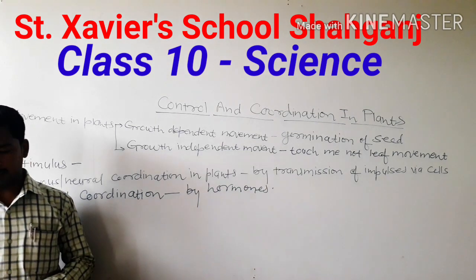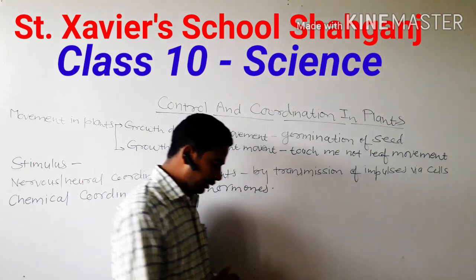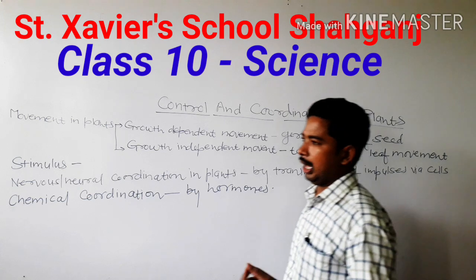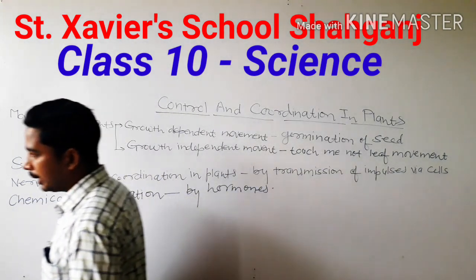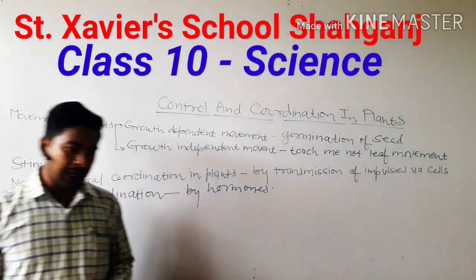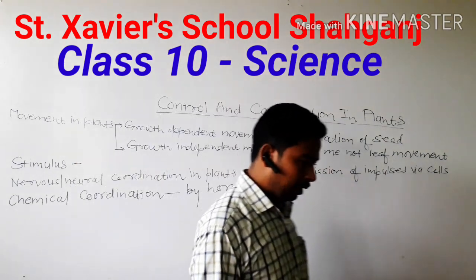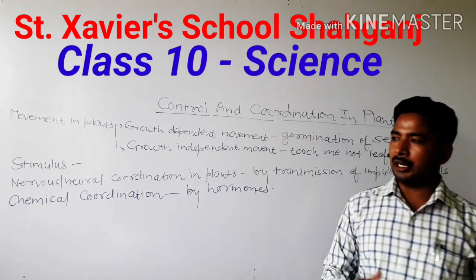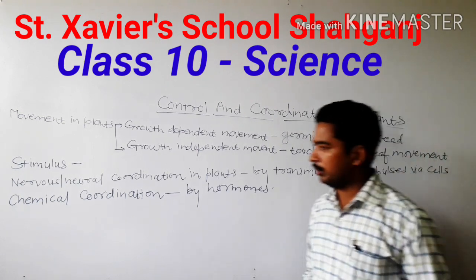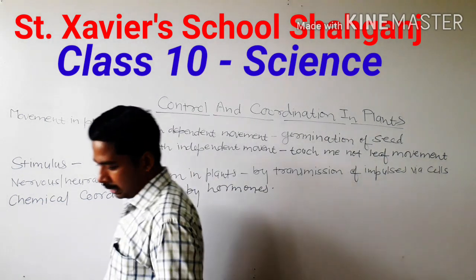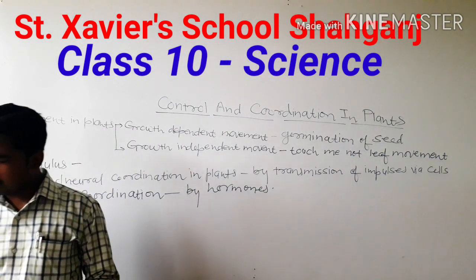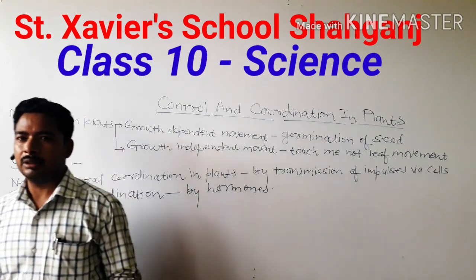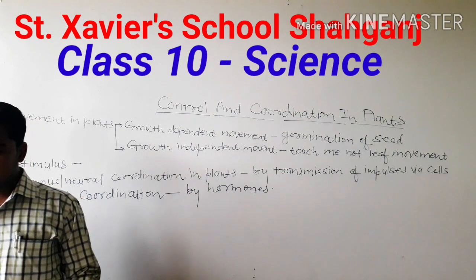Another example of plant movement is the germination of seeds. When seeds get an appropriate amount of light, moisture, and air, and are put into soil, they turn into plants. This turning of a seed into a plant, called germination, is also an example of movement. Similarly, movement of sunflowers in response to sunlight is another example of movement.